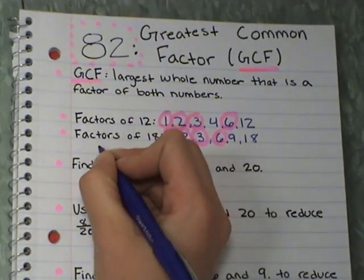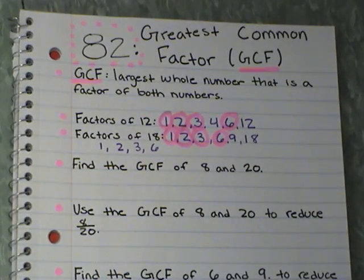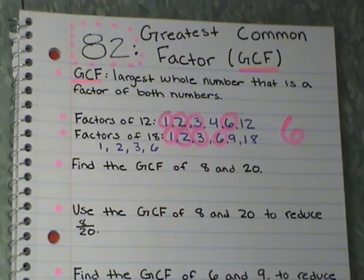But the greatest or the biggest of these factors is what? 6. Because that is the biggest number that they have in common. So the greatest, the biggest, common meaning with both of them, of a factor here is 6. So the GCF of 12 and 18, your answer would be 6. Alright. Go ahead and try the next one by yourself.